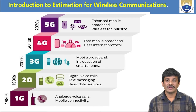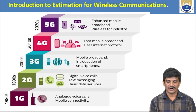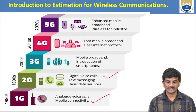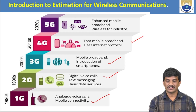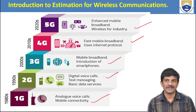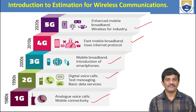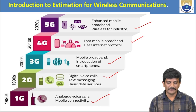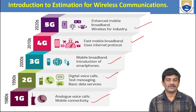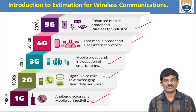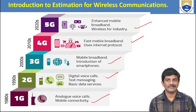You can observe when the evolution started: 1G began in the 1980s, 2G in the 1990s, 3G entered in the 2000s, 4G in the 2010s, and 5G — which enhanced mobile broadband wireless for industry — entered around 2019–2020. These are the evolution years of wireless communication enhancements across 1G through 5G.